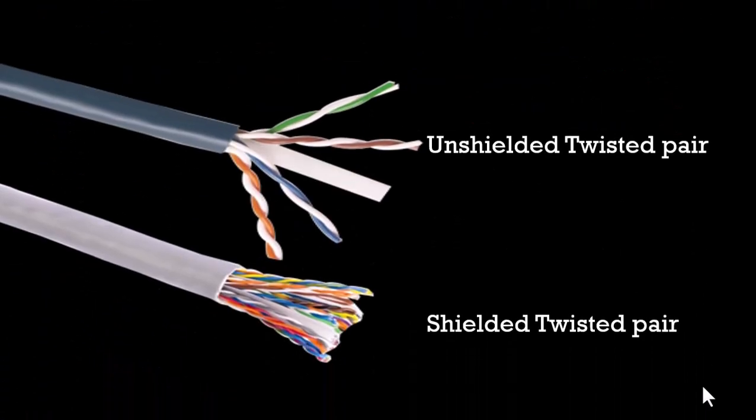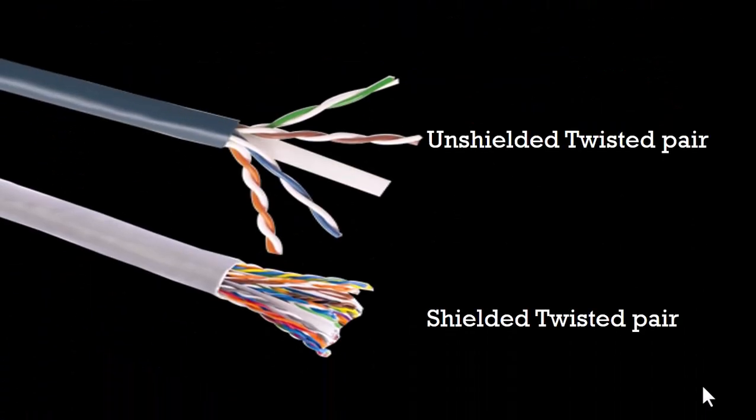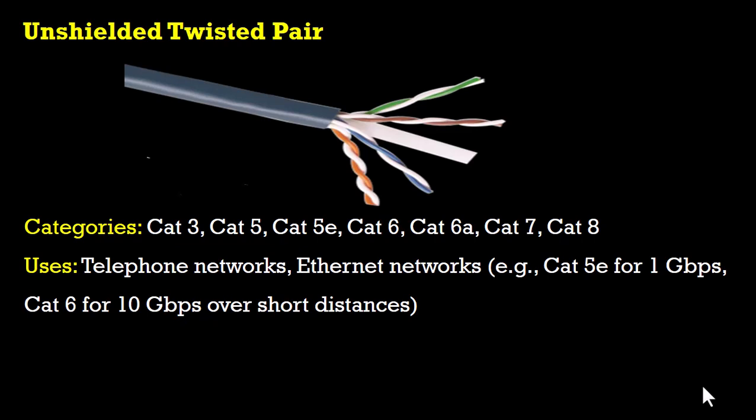Under the twisted pair cables, we have two types: the unshielded twisted pair and the shielded twisted pair. The unshielded twisted pair has various categories including CAT3, CAT5, CAT5e, CAT6, CAT6a, CAT7, and even CAT8 cables. It is usually used in telephone networks and Ethernet networks. Its advantages include that it is cost effective and typically easy to install. However, it has the disadvantage of being susceptible to electromagnetic interference and crosstalk compared to the shielded cable.